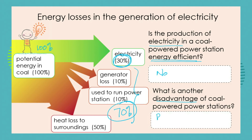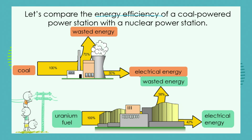Another disadvantage of the coal power station is pollution. Burning coal produces air pollution — not only soot and carbon in the air, but also large amounts of carbon dioxide, which is a greenhouse gas. If we compare the energy efficiency of our coal-powered power station with a nuclear power station, we put in a hundred percent with coal and we've seen that 70 percent is wasted and only 30 percent is useful electrical energy.